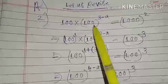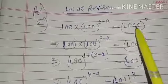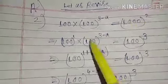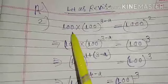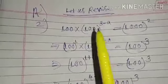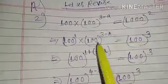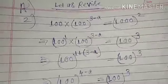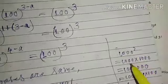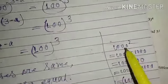Here the power of 100 is (3 − a) and the power of 1000 is 2. Now, 100 to the power 1 is just 100. And 1000 squared means 1000 × 1000, which gives you 1,000,000 — that is, a 1 followed by six zeros.